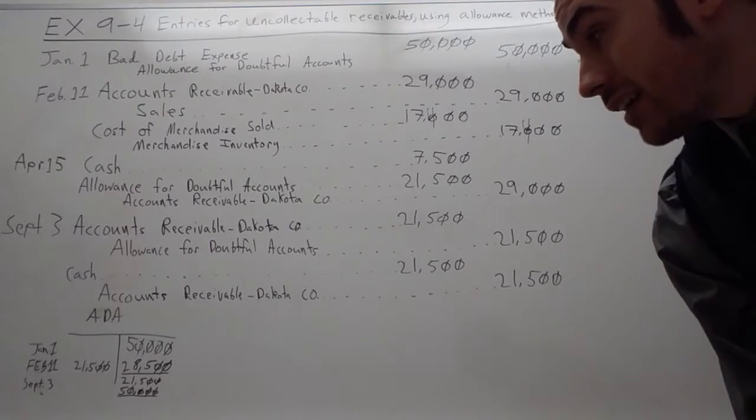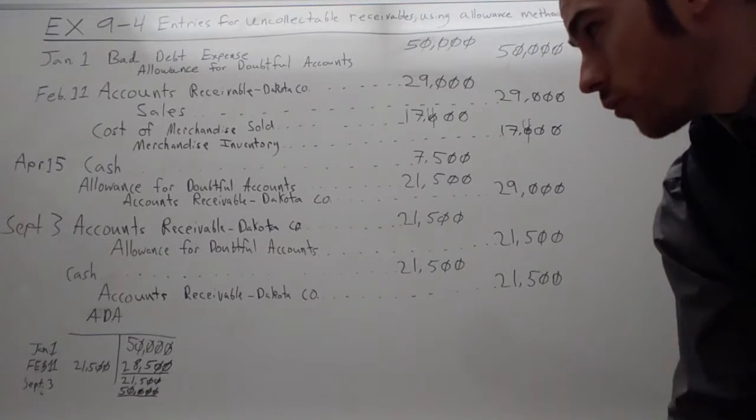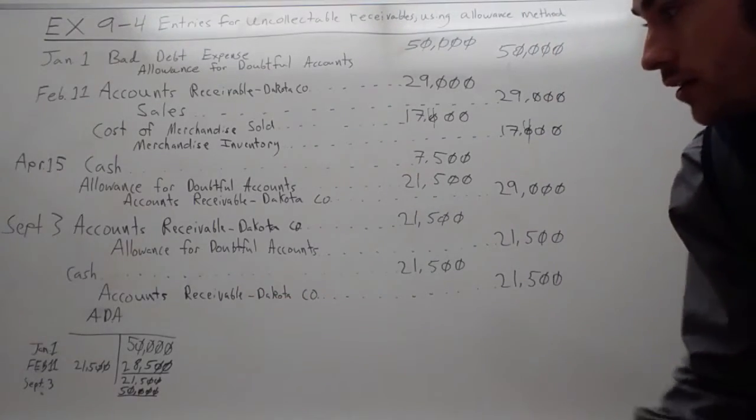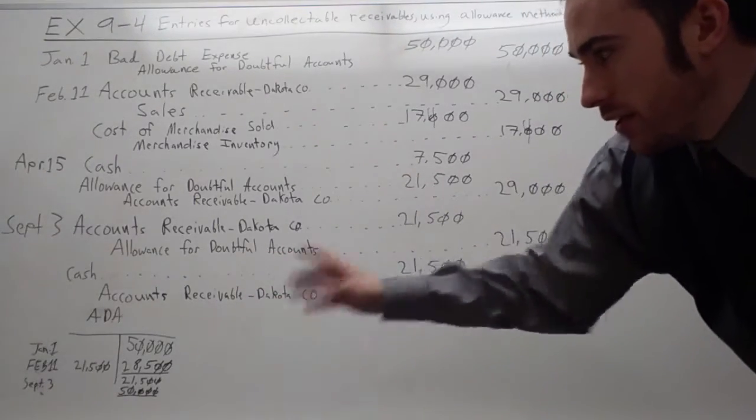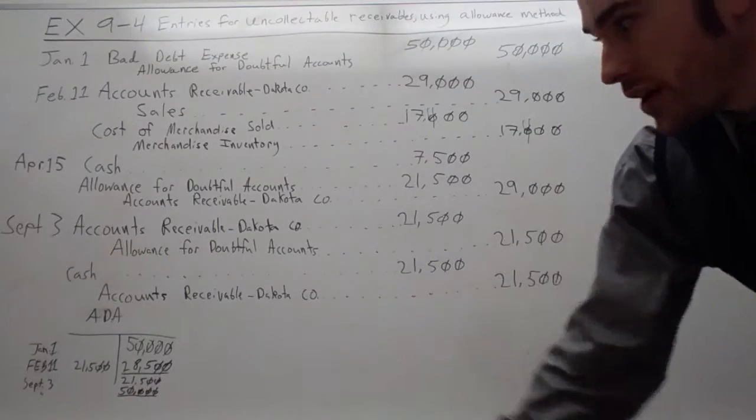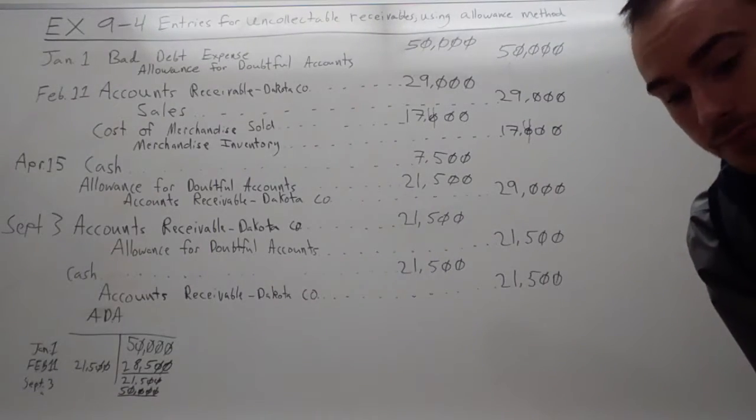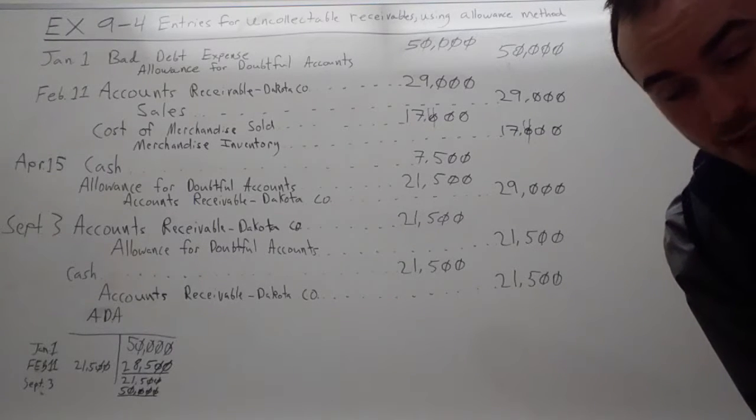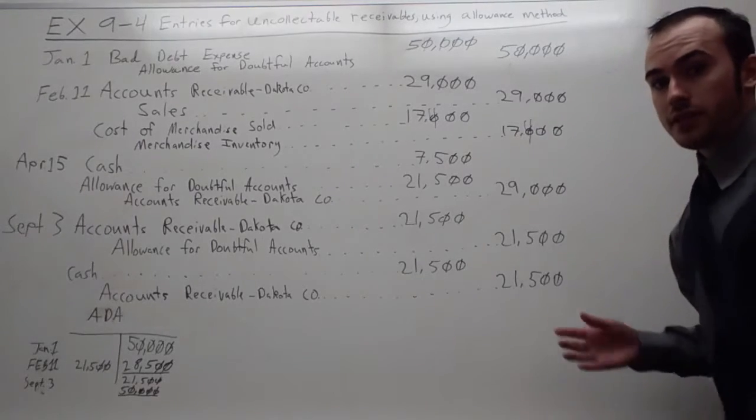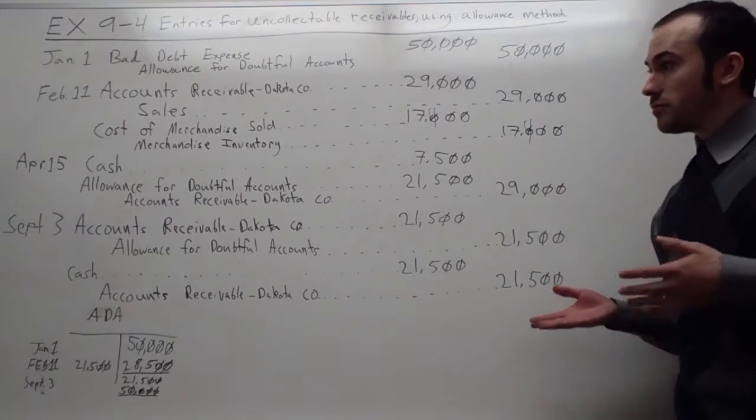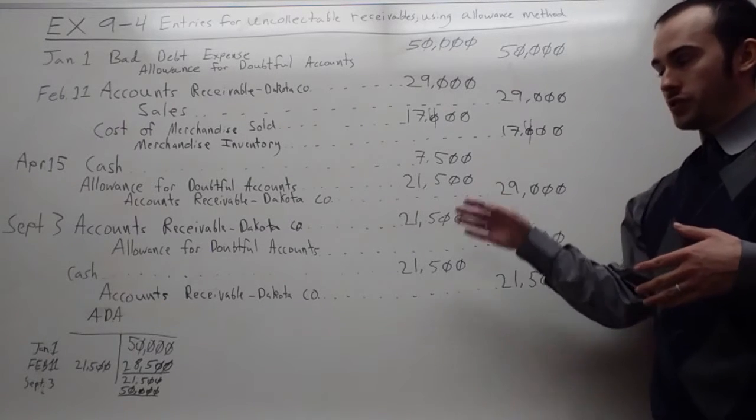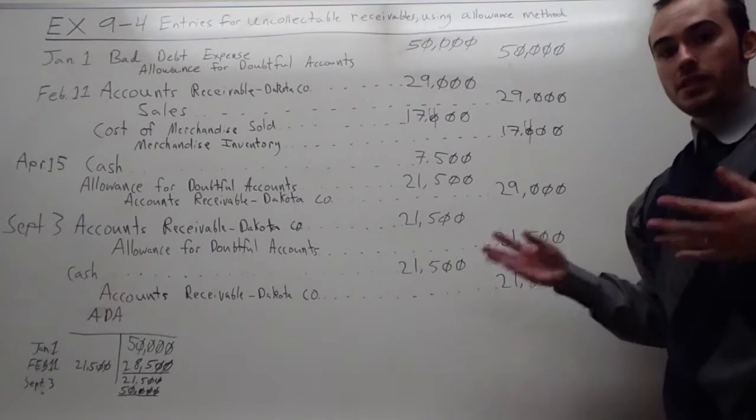And then I did a little T-account here for the allowance for doubtful accounts to show what it looks like. You credit it for what you estimate, you debit off what is written off, and then if people do end up paying, then you credit it back in. And so that's the allowance for doubtful account method. I hope it was simple. It could get a lot more complicated if you wanted to and add more transactions or more companies, but this is basically it.